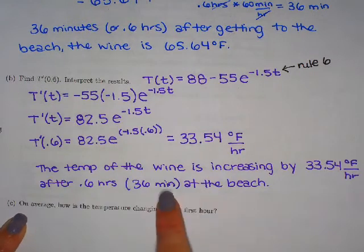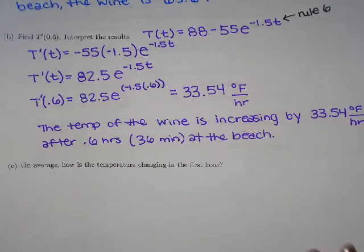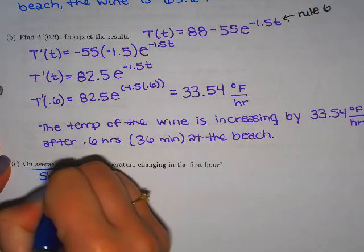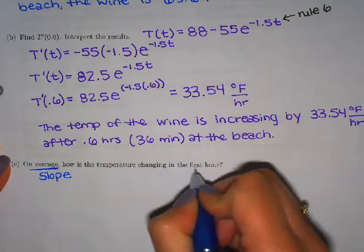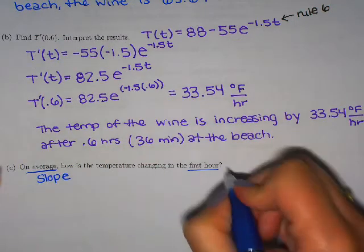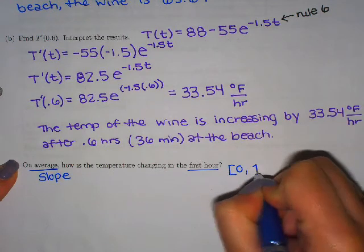So let's compare that to the average change in the temperature. So we know how fast it's changing at exactly 36 minutes. Well, what's the overall change in the first hour that it sits at the beach? So it says on average, which tells us to use the slope. And it says in the first hour, so it doesn't give us a nice interval A to B. So we need to think about what that is.